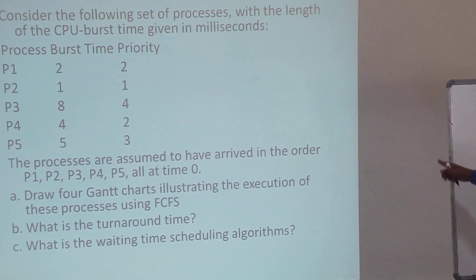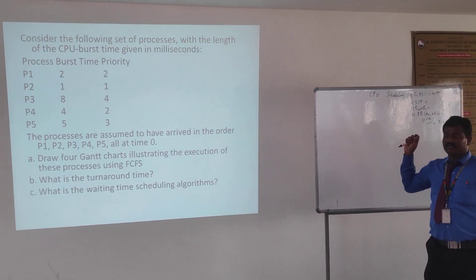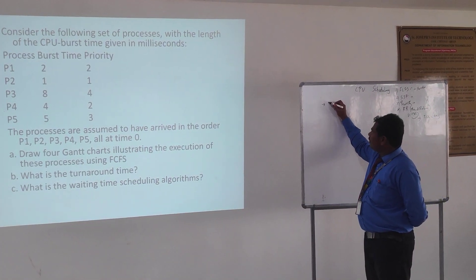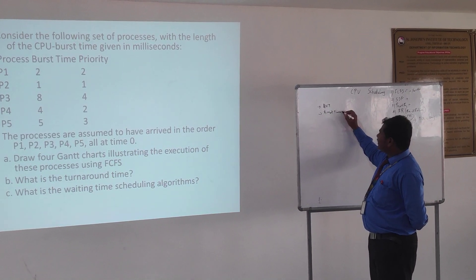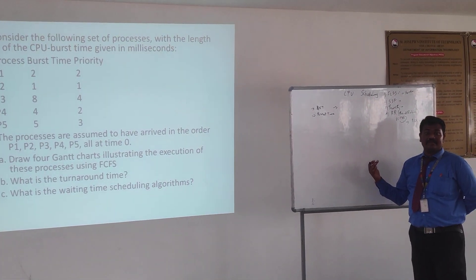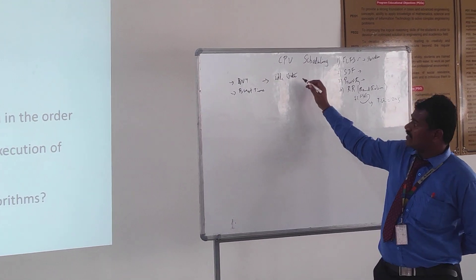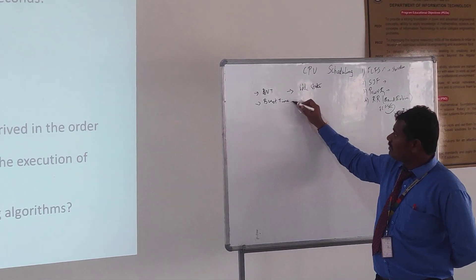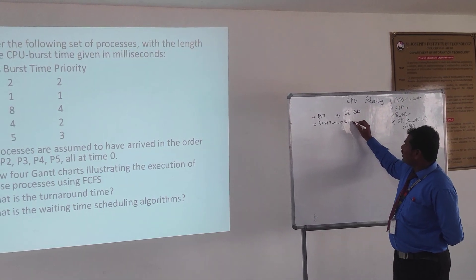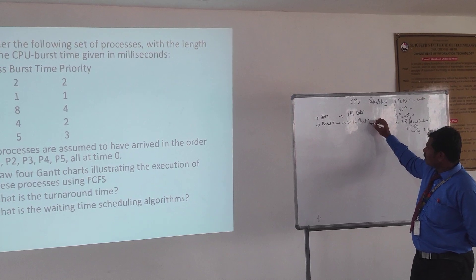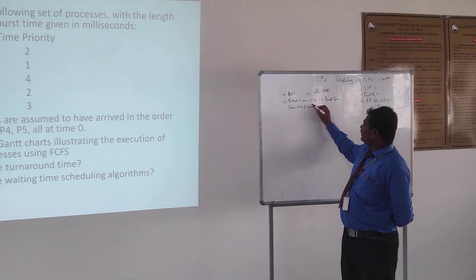Now we will be discussing a problem related to CPU scheduling. In this problem we are going to draw the Gantt chart for the FCFS algorithm. Before going into the problem, we should know what average waiting time and burst time are. Waiting time is the time a process spends not executing any work — that is, the process is in an idle state. Burst time is the total amount of time taken to complete its work.